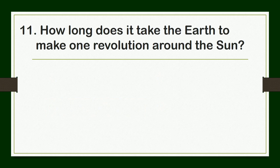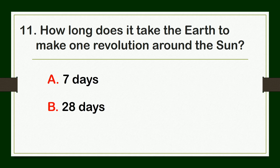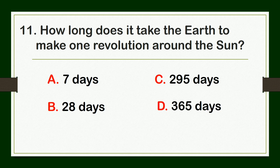How long does it take the Earth to make one revolution around the Sun? A. seven days, B. twenty-eight days, C. two hundred ninety-five days, or D. three hundred sixty-five days.